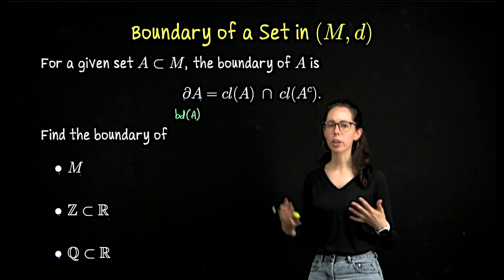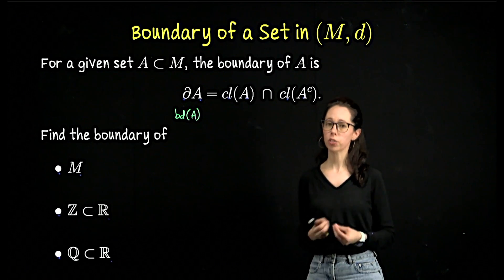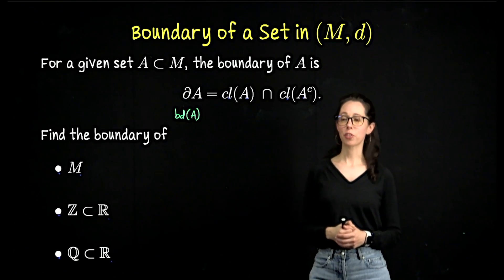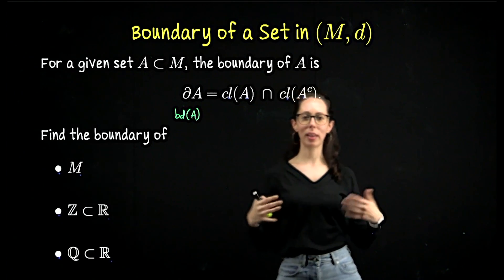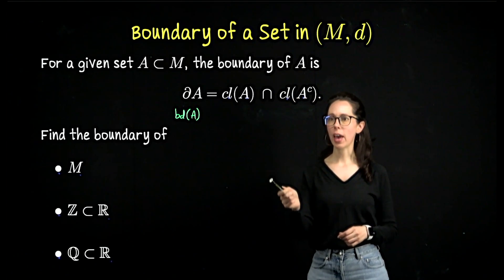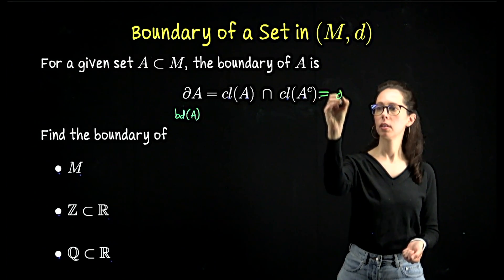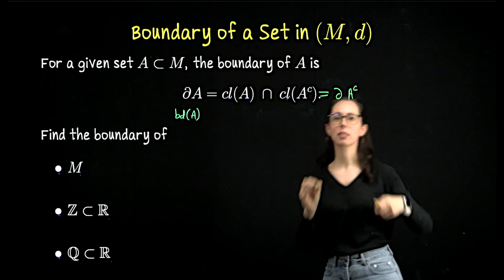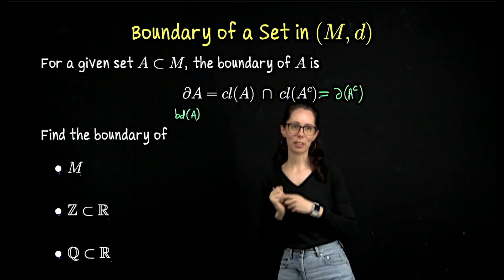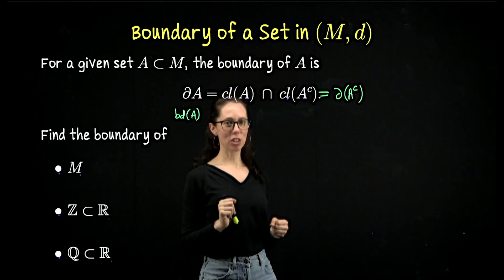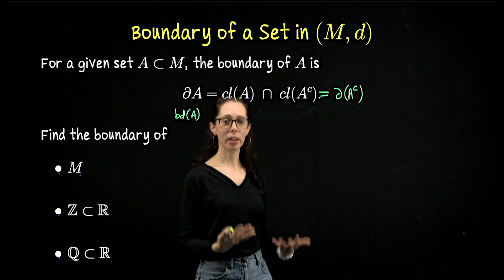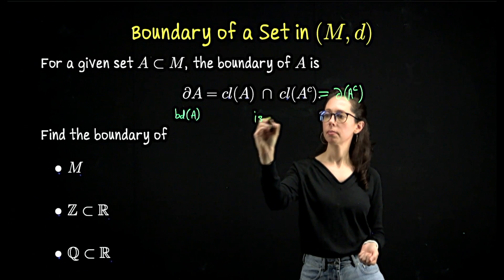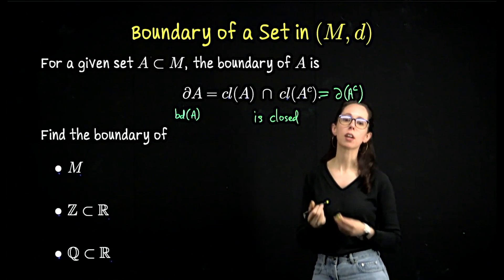Take a moment to come up with one or two properties of the boundary that you can deduce just from looking at this definition. The first observation is that A and A complement play symmetric roles in this definition, so the boundary of A is also going to be the boundary of A complement. The other observation is that both of these sets are closed — we're computing their intersection, and even if it's empty, the intersection of closed sets is always closed. So boundaries are closed sets.